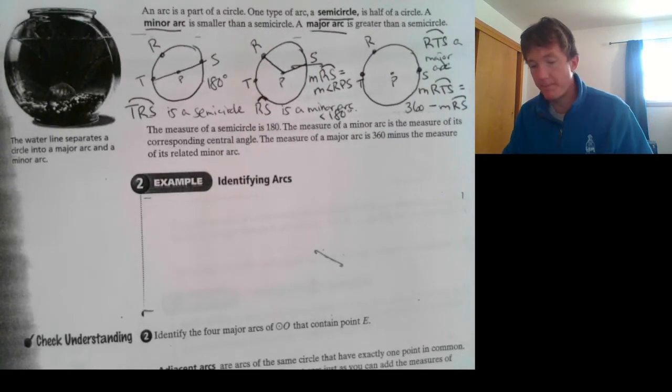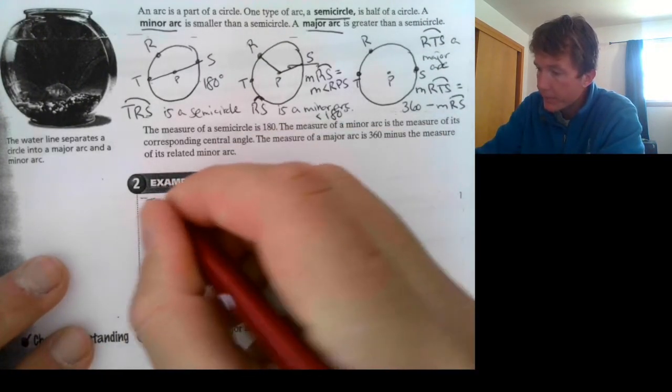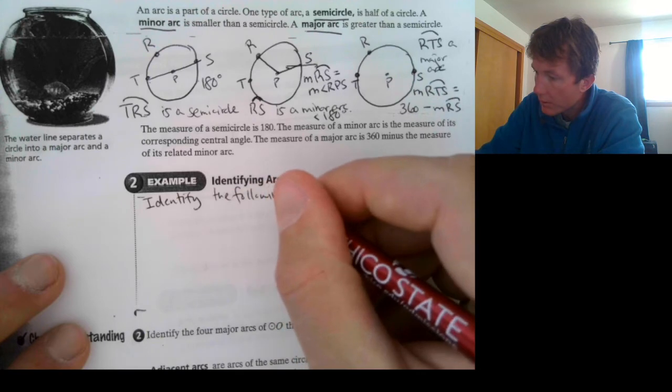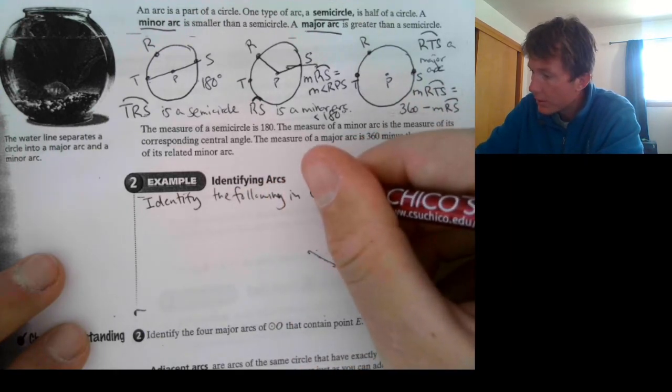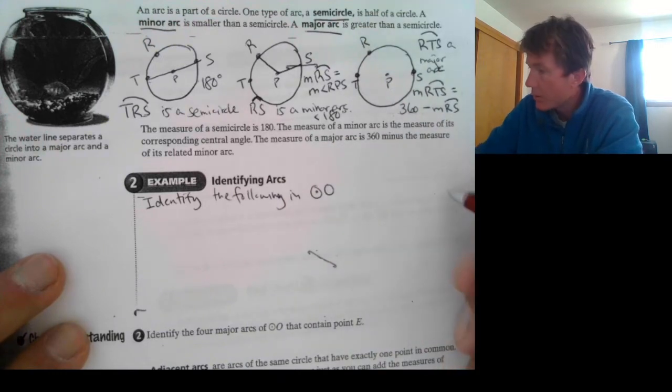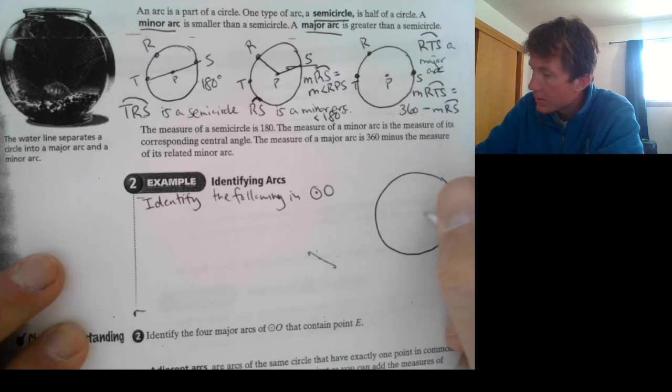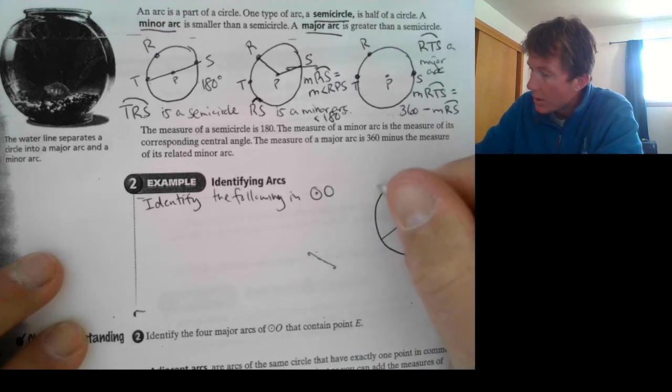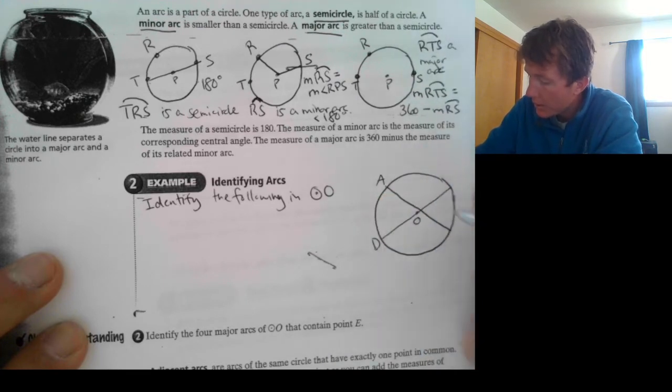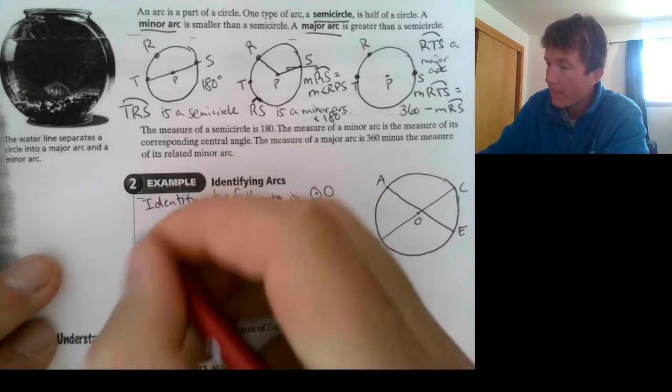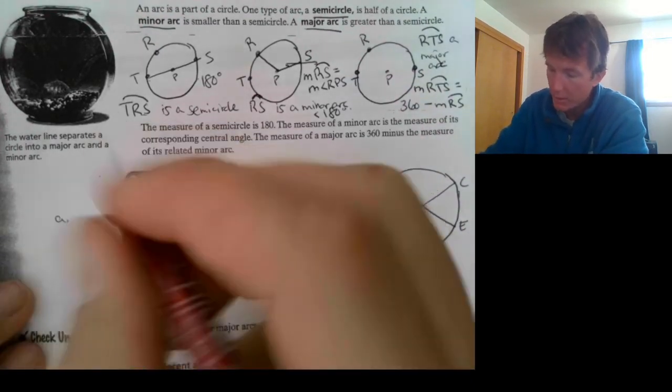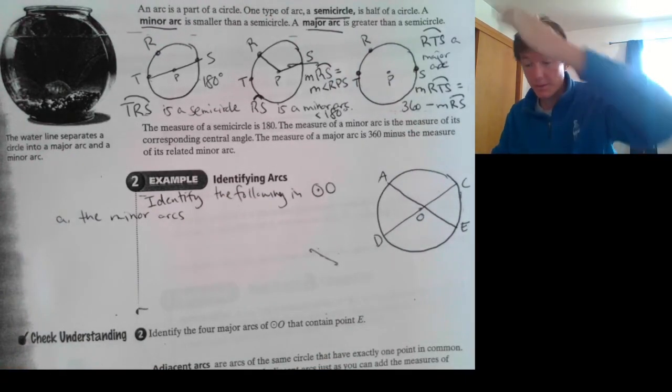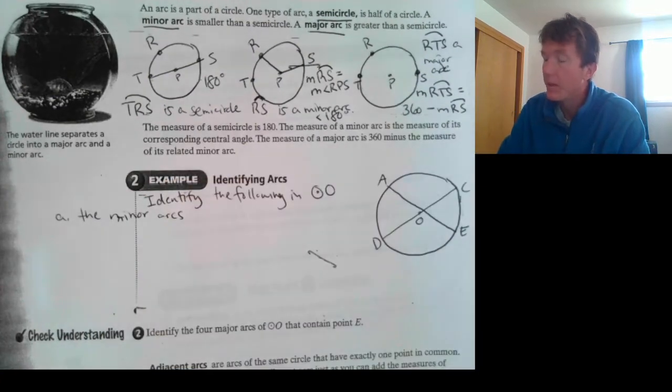Okay, so let's identify some arcs. So, we're going to identify the following in circle O. So, I have my circle. This is circle O, so that's going to be my central point. And I've got these points on the circle, A, D, E, C. So, we'll start with letter A. I'm going to go out here to have more space. Identify all the minor arcs. Let's look at the minor arcs. These are the minor arcs. This is anything less than a semicircle.